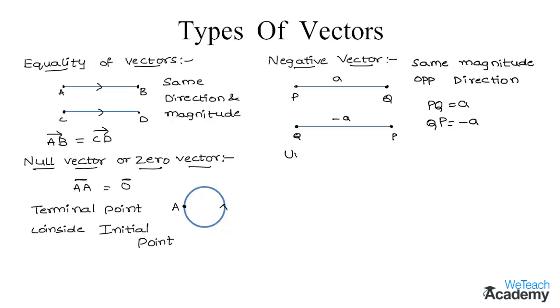So we can see that a vector of the length one unit is called a unit vector, and it is denoted by this symbol, and we read this as A cap.